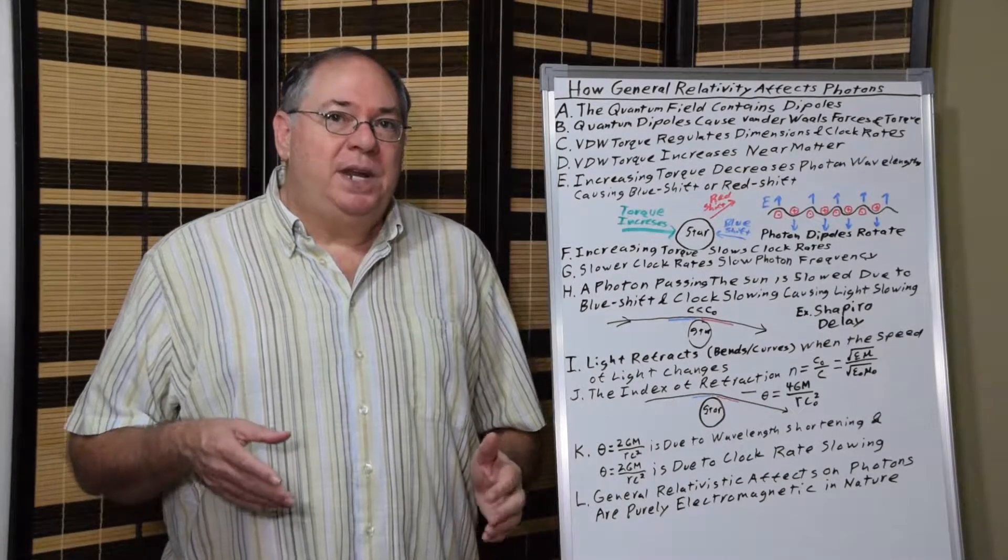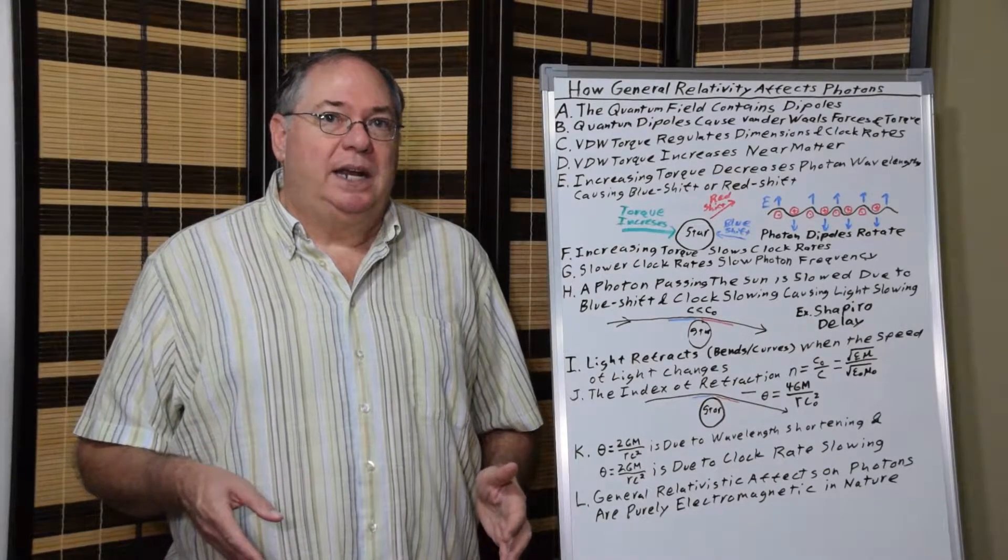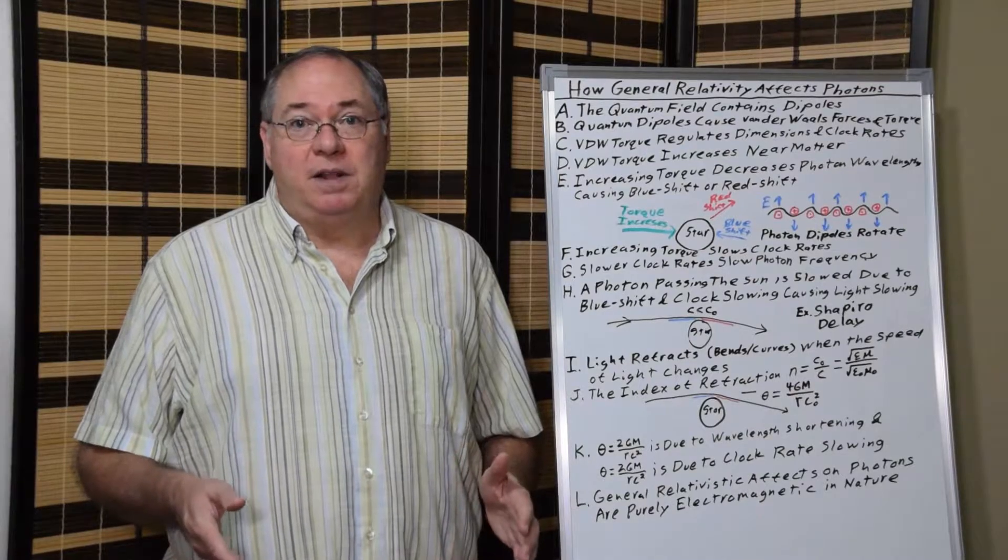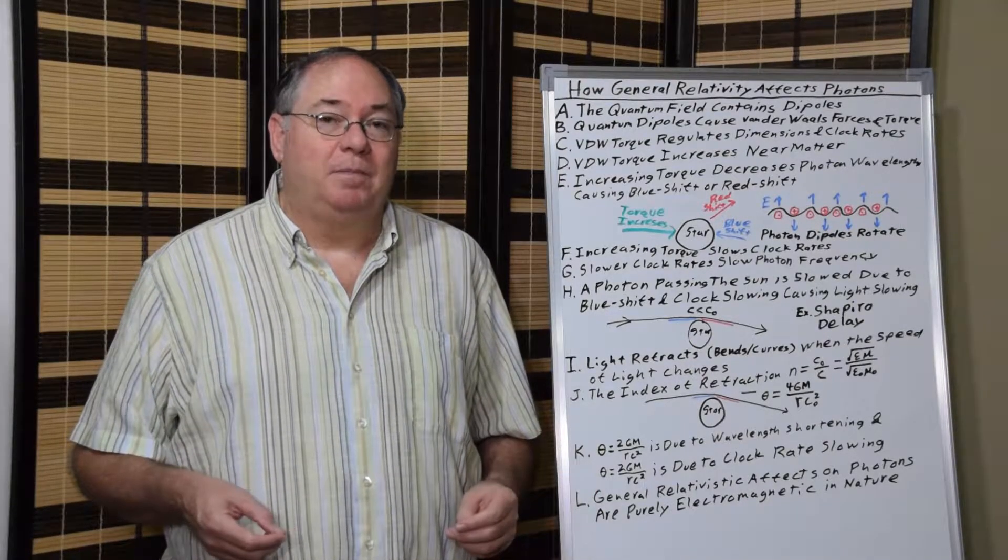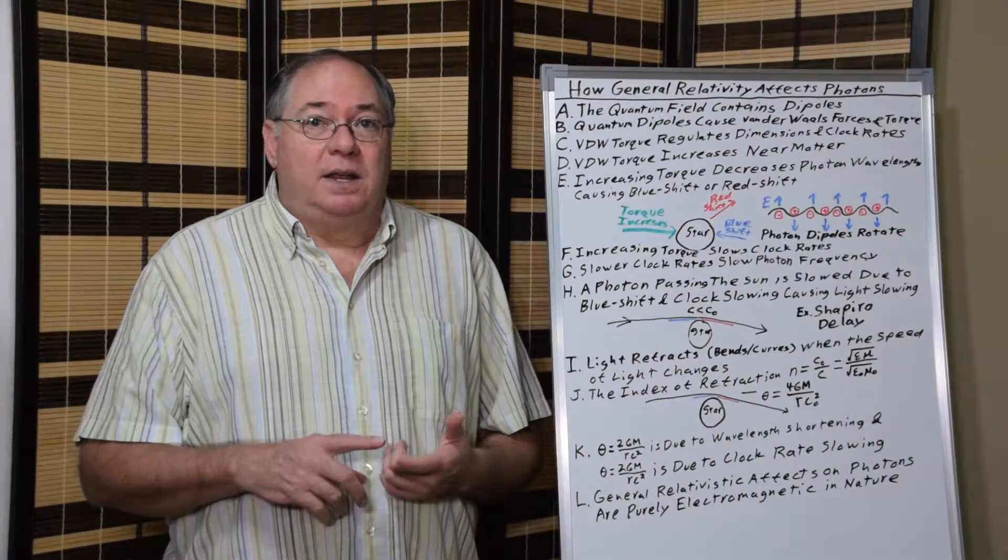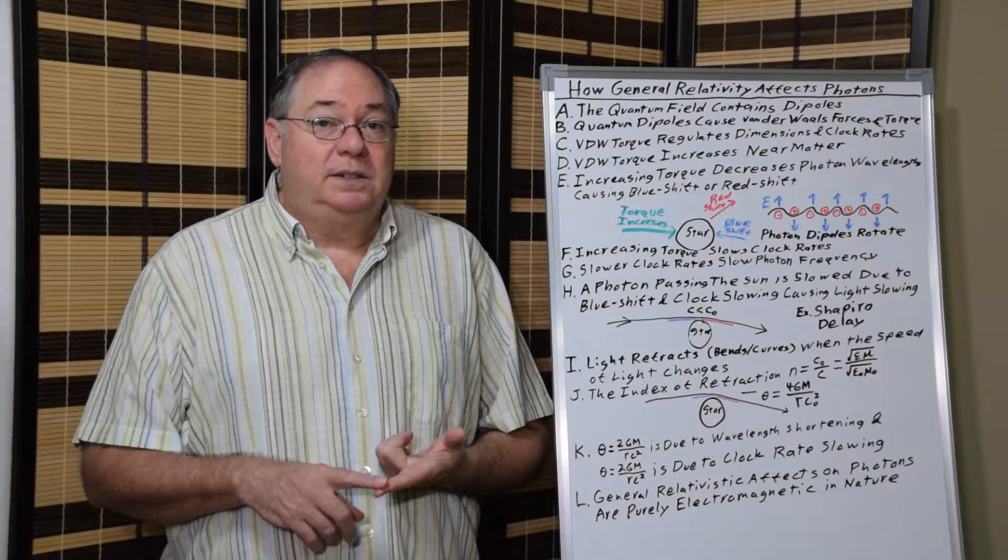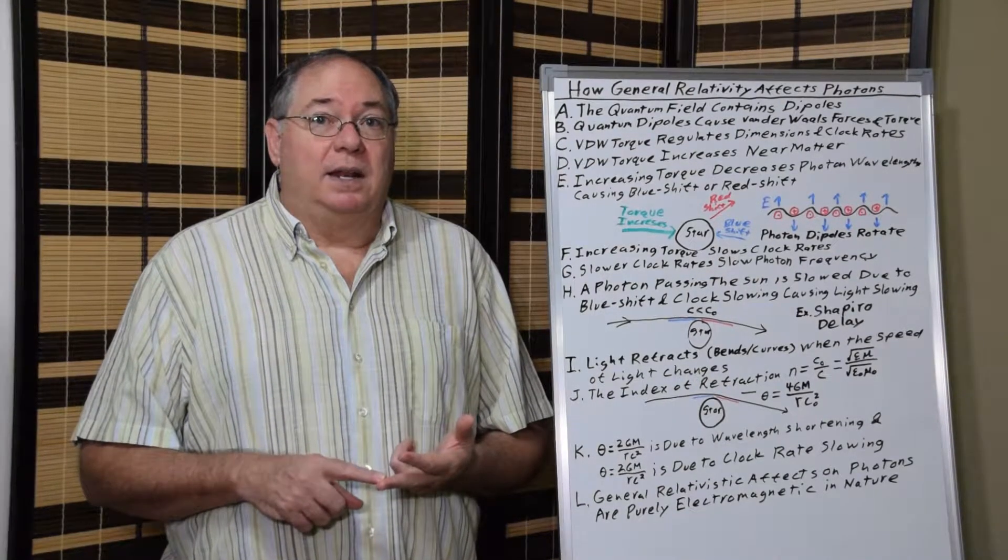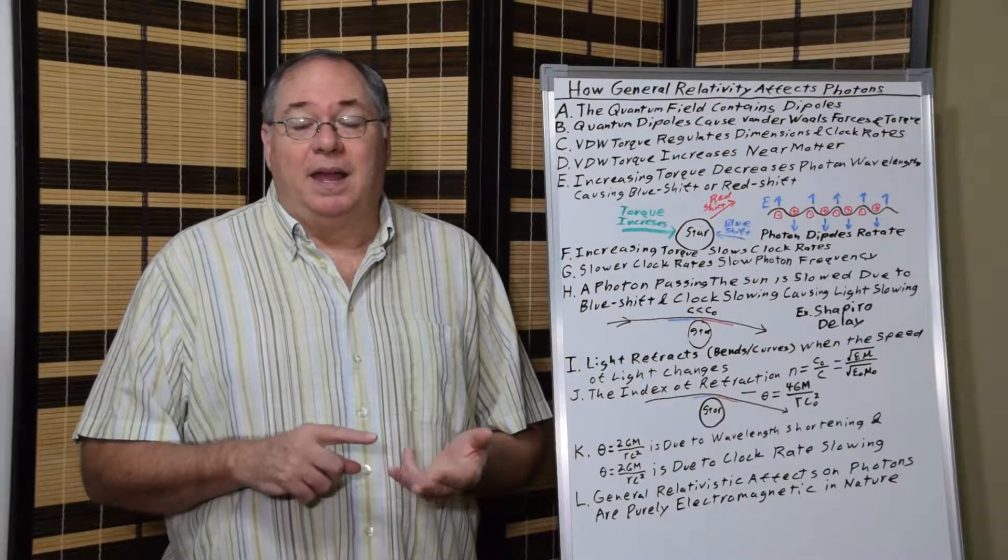In particular, we need to understand how the three basic proofs of general relativity involving photons happen. Those proofs are photon redshift or blueshift depending on which way the photon is going, light slowing, and light bending.